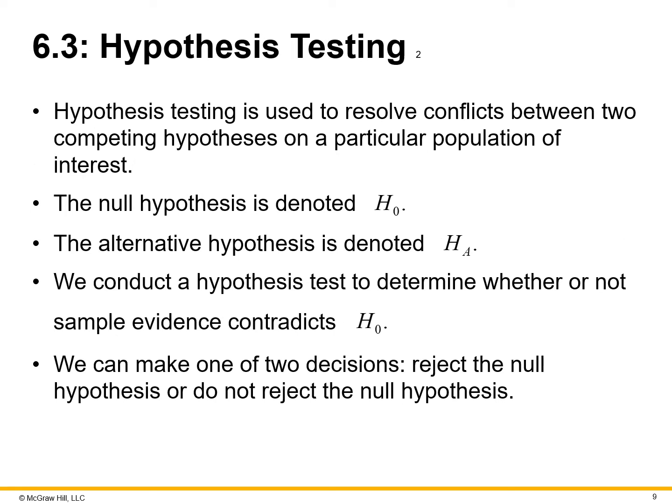Hypothesis testing is used to resolve conflicts between two competing hypotheses on a particular population of interest. Sometimes in business it's an internal debate about strategy, and we use hypothesis testing to find out which conclusion makes the most sense. The null hypothesis is denoted as H₀ — it's the first hypothesis, representing what you go in assuming to be true. For example, 'we believe our customers are doing this.' The alternative hypothesis is a secondary theory — a second view. We conduct a hypothesis test to determine whether sample evidence contradicts H₀, which is the main objective: is it true or not?